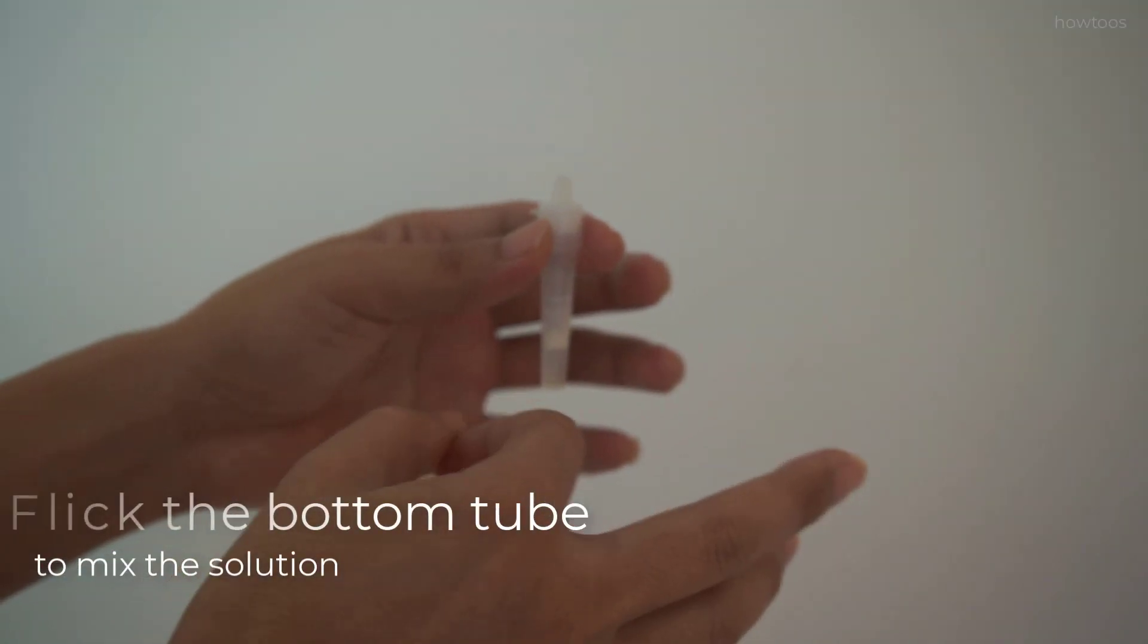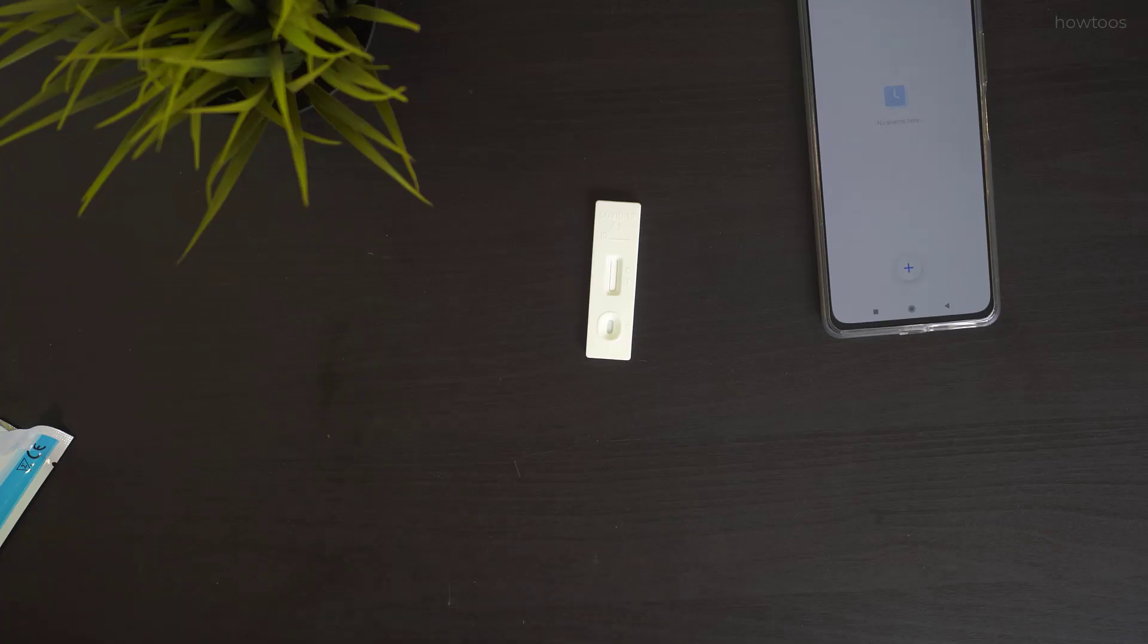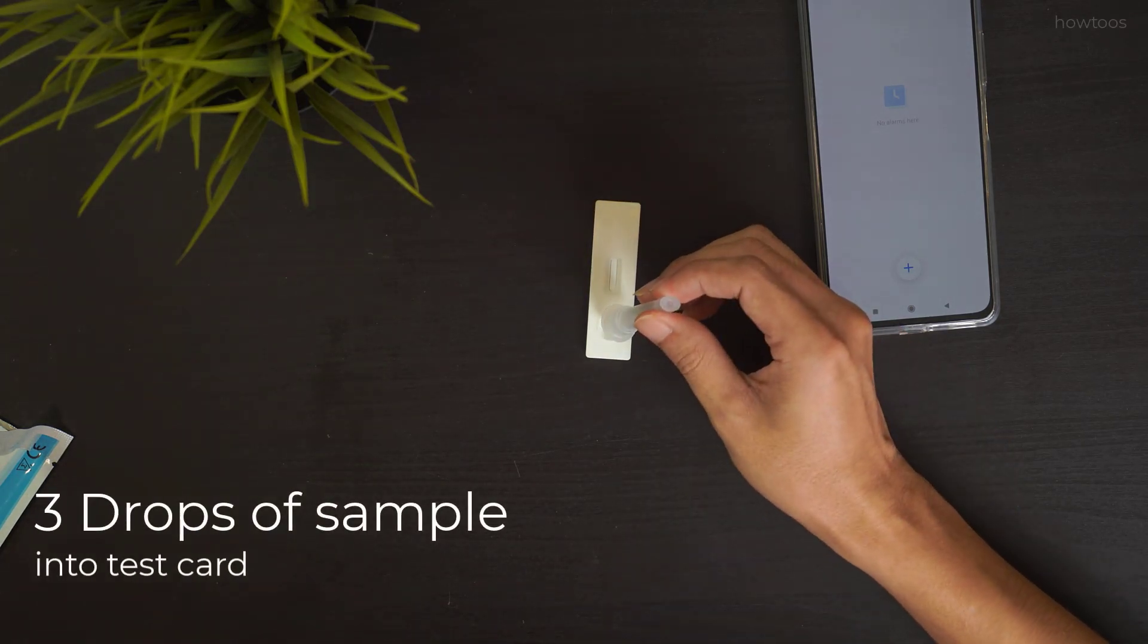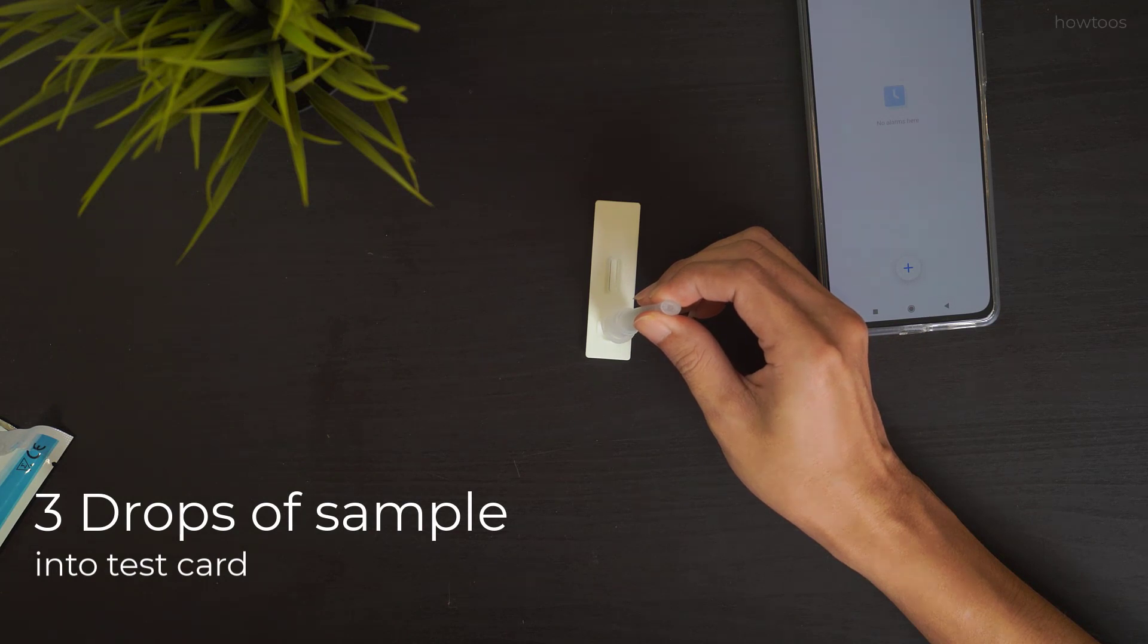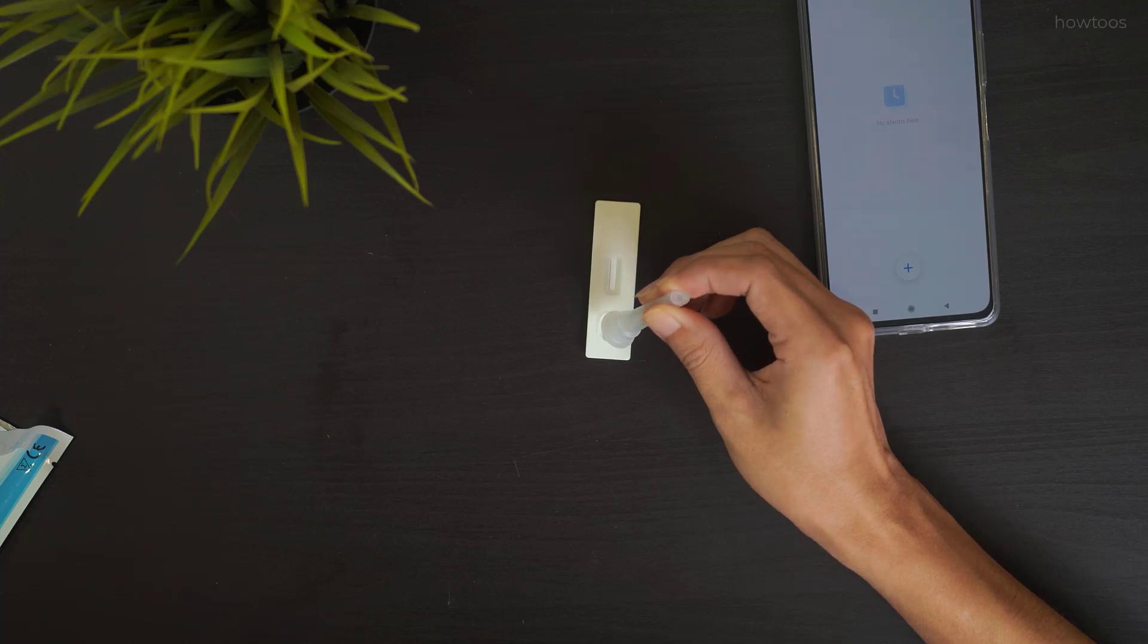Before testing, flick the bottom of the test tube a few times to mix the solutions. Squeeze the tube, hold the tube upside down, and expel three drops of sample through the cover into the test card.